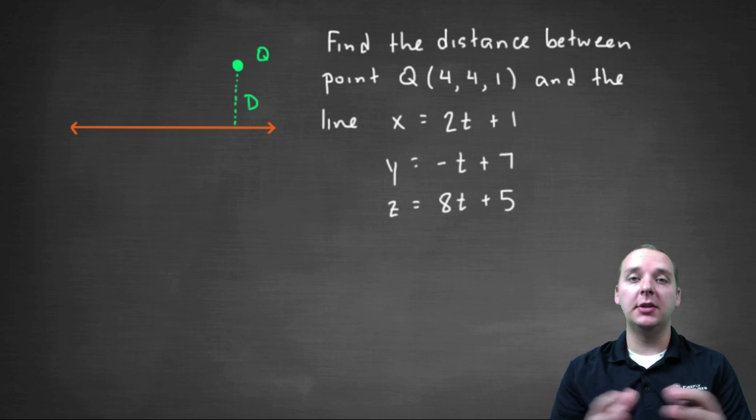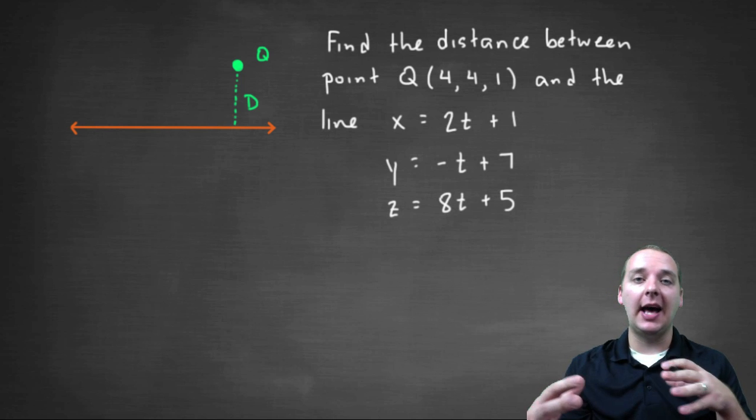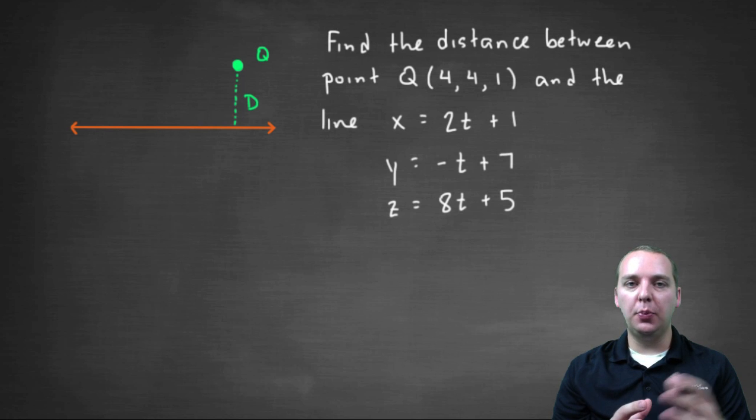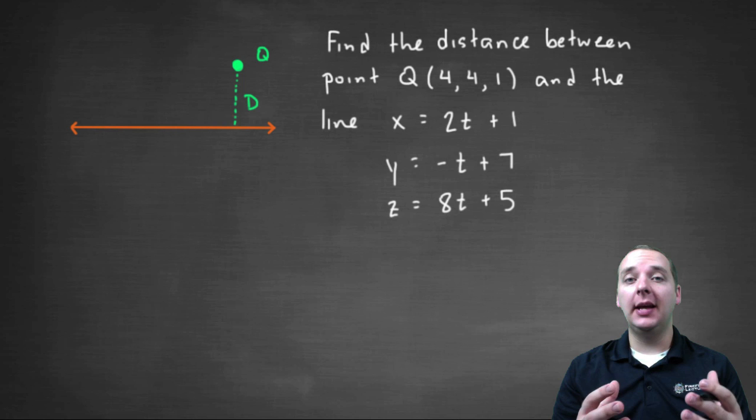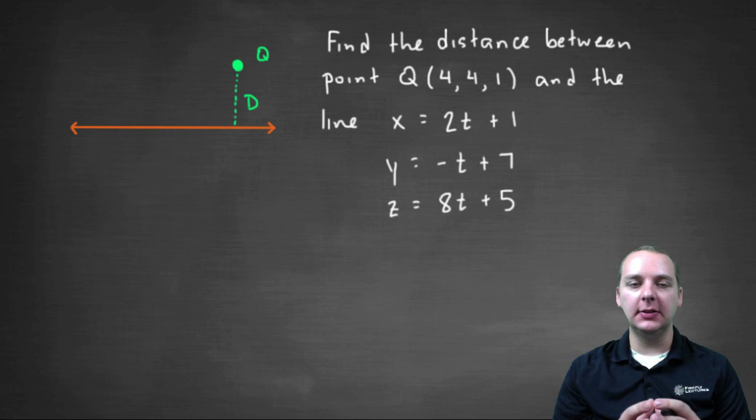In this exercise we're given a set of parametric equations which represents a line in space, and we're also given a point Q, which is a random point in space. And we're being asked to find the shortest distance from the point Q to the line.